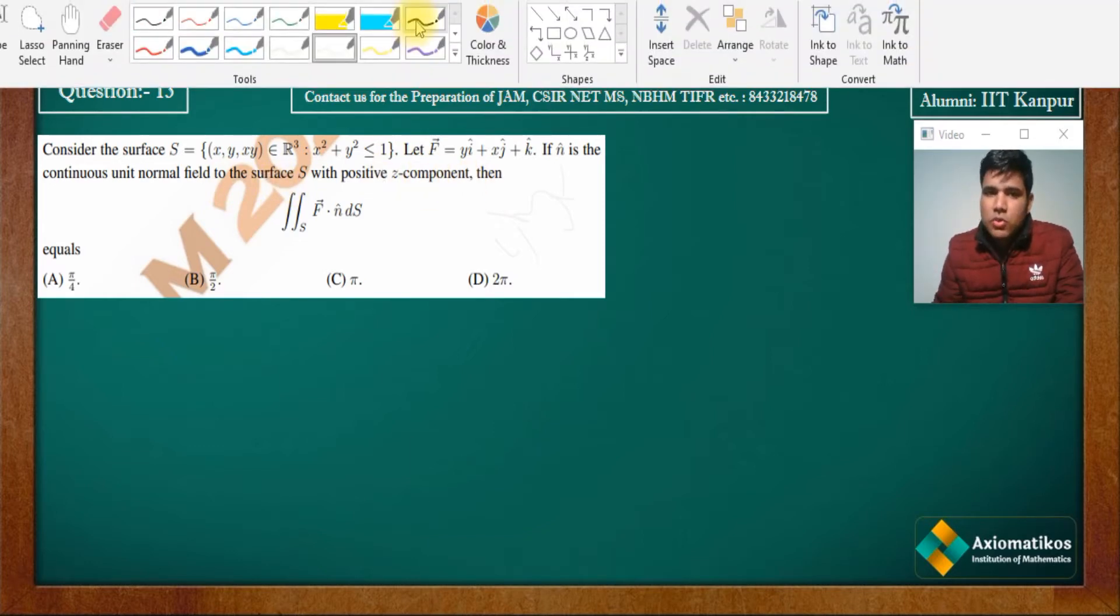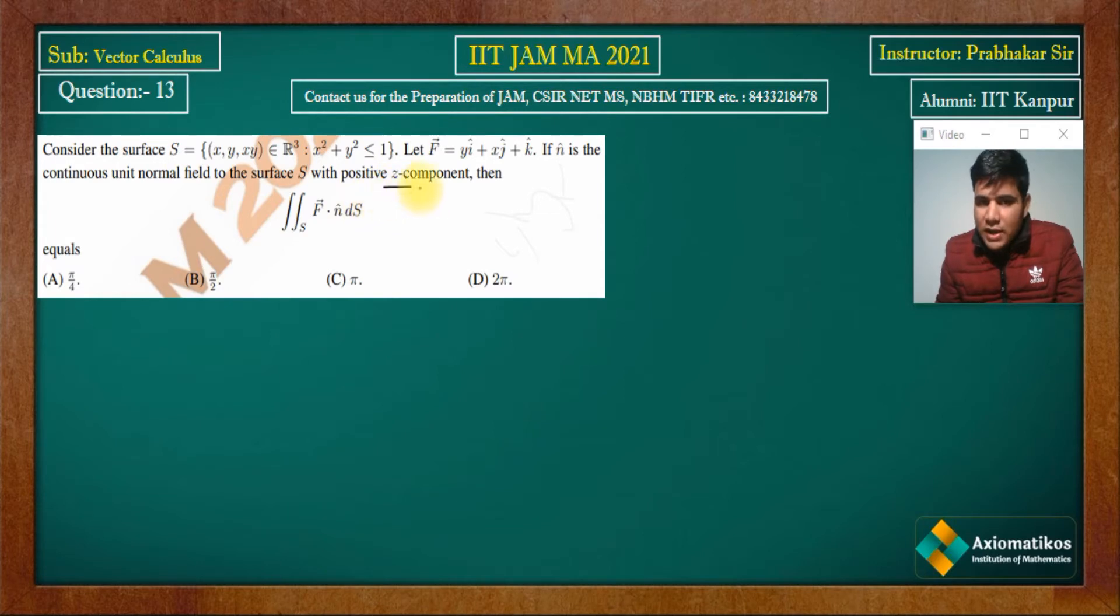If n cap is the continuous unit normal field to the surface S with positive z component, I want to highlight that the z component has its own importance. So you have to find this integration, what will be the value. First of all, the surface that you have given me is z equals xy. Consider phi equals z minus xy, which is the surface.